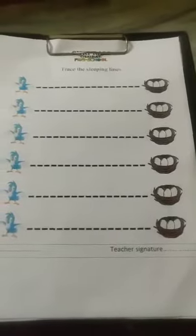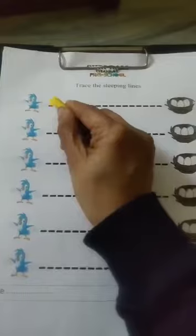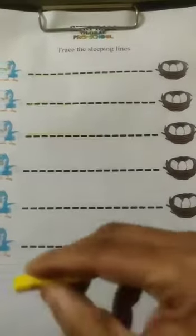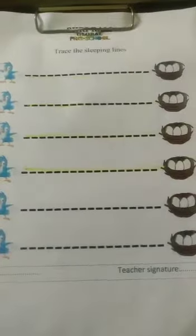And now it's time to do a worksheet. In this worksheet, we are supposed to trace the sleeping line from left to right. So let's get started. From left to right — yes, like this. Once again, from left to right. Alright everyone, once again from left to right. From left to right, it becomes a sleeping line.